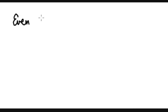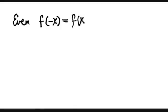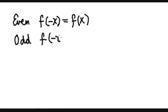Determine if the function is even, odd, or neither. Let me refresh the memory: a function is an even function if f evaluated at negative x is equal to f evaluated at x — the original. A function is an odd function if f evaluated at negative x is equal to minus f evaluated at x.